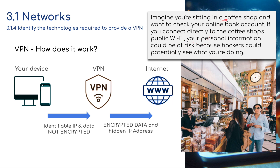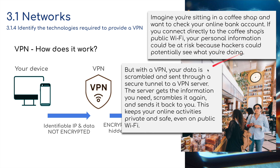Imagine you're sitting in a coffee shop — Costa or Starbucks, where coffee is very expensive — and you want to check your online bank account. If you connect directly to the coffee shop's public Wi-Fi, your personal information could be at risk because hackers could potentially see what you are doing. But with a VPN, your data is scrambled and sent through a secure tunnel to a VPN server. The server gets the information you need, scrambles it back, and sends it to you — keeping your online activities private and safe even on public Wi-Fi.